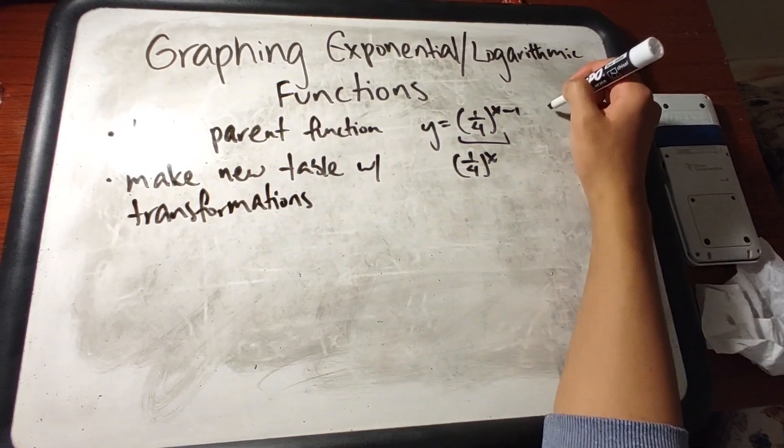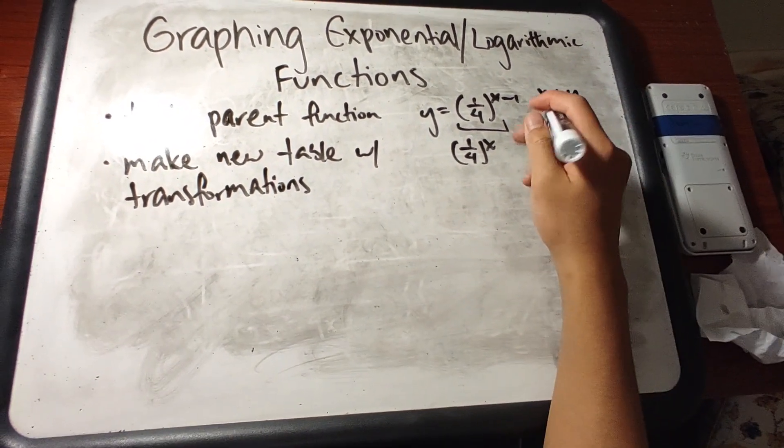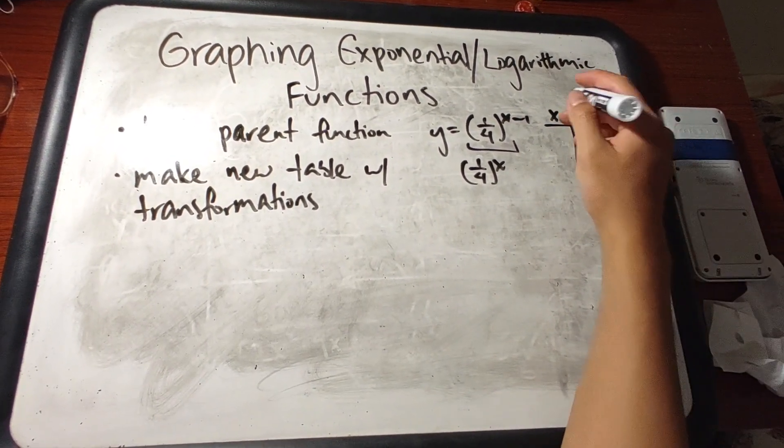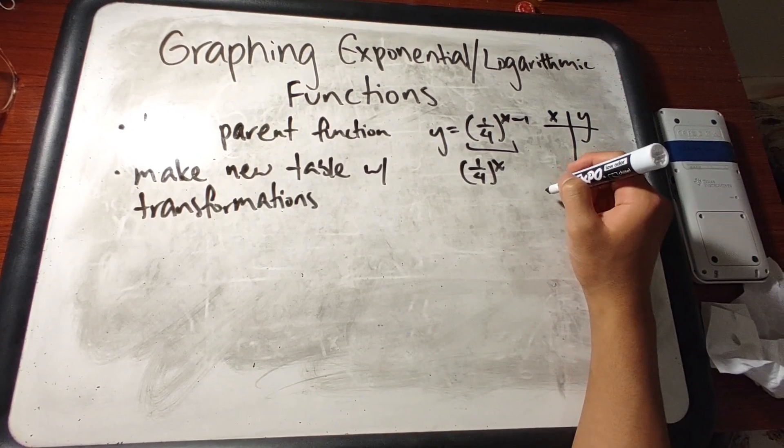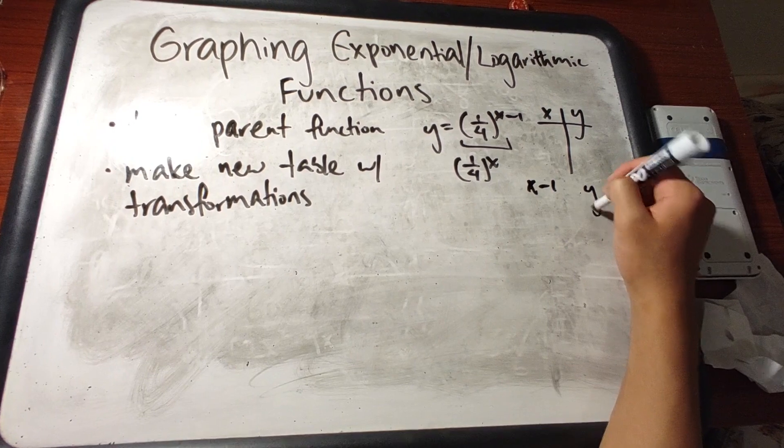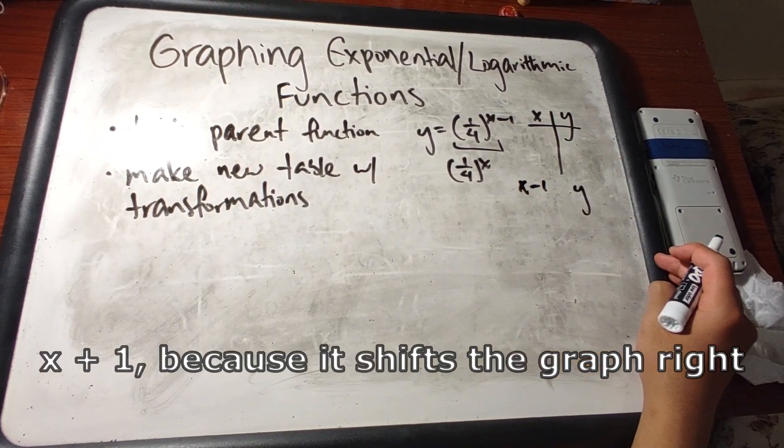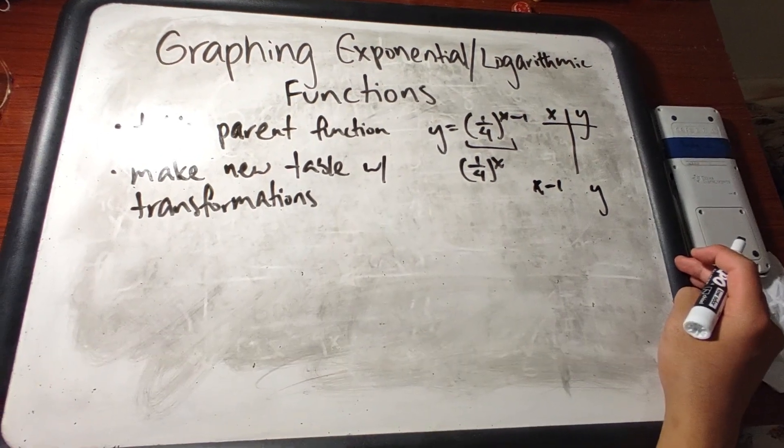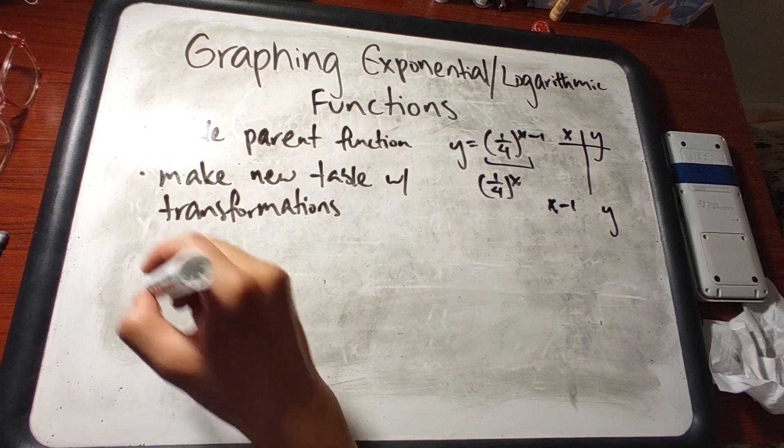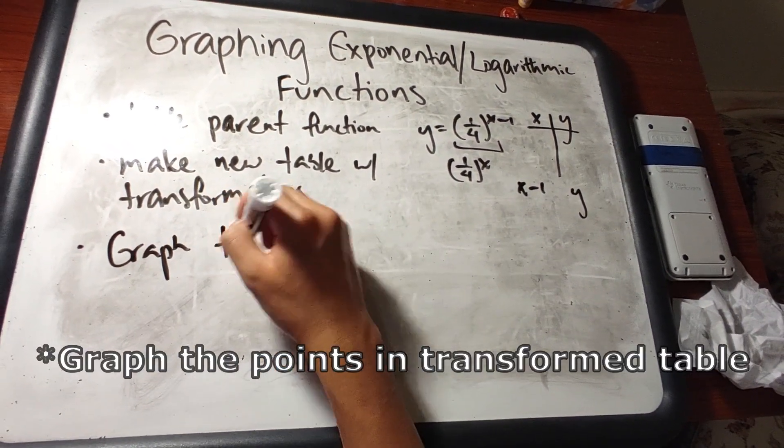So in this case, for the table with the parent function, it will have x and y values. Instead of it being x over here, you make a new table that makes x the x minus 1 while the y stays the same because the transformation over here is x minus 1. And after that, you graph the points that are inside the transform table.